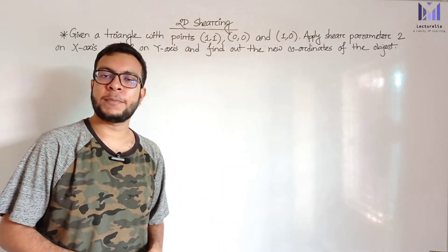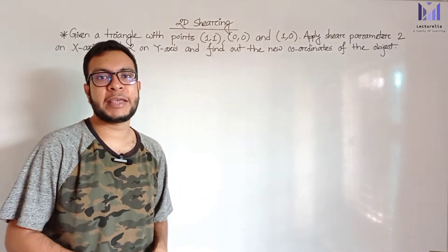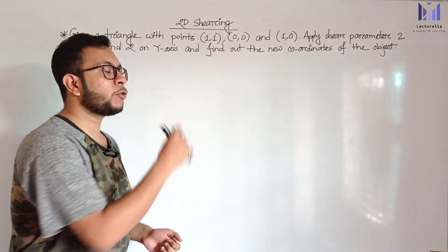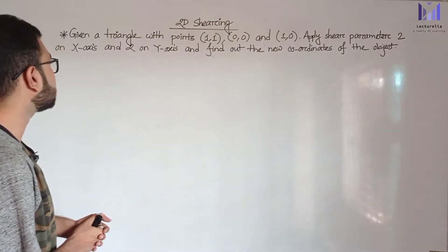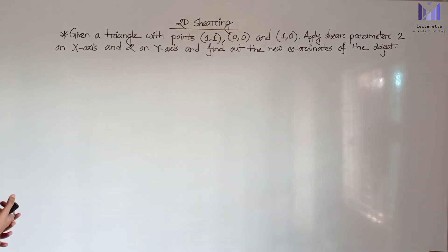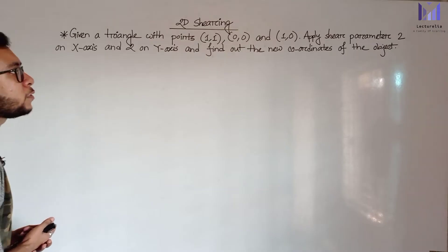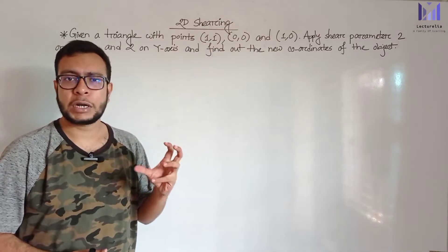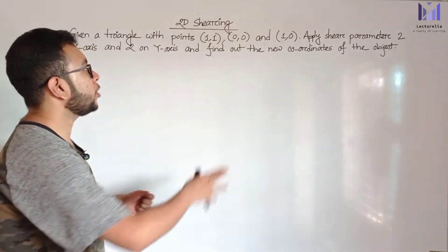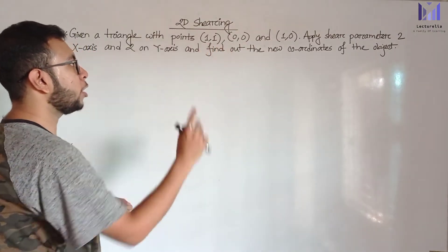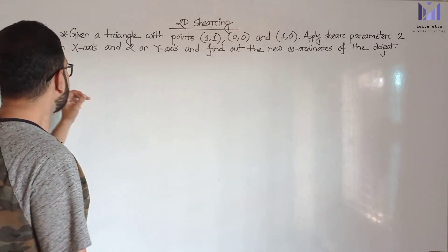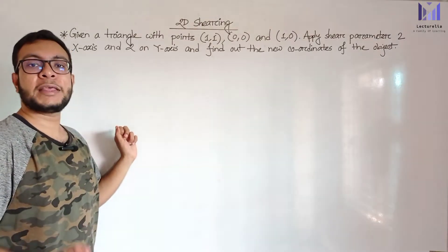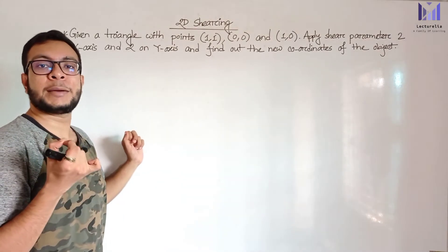First of all, let's look at the last lecture video solution. Going directly to the question: the question is about a triangle given with points (1,1), (0,0), and (1,0). We need to find the new coordinates of that triangle after applying shearing.